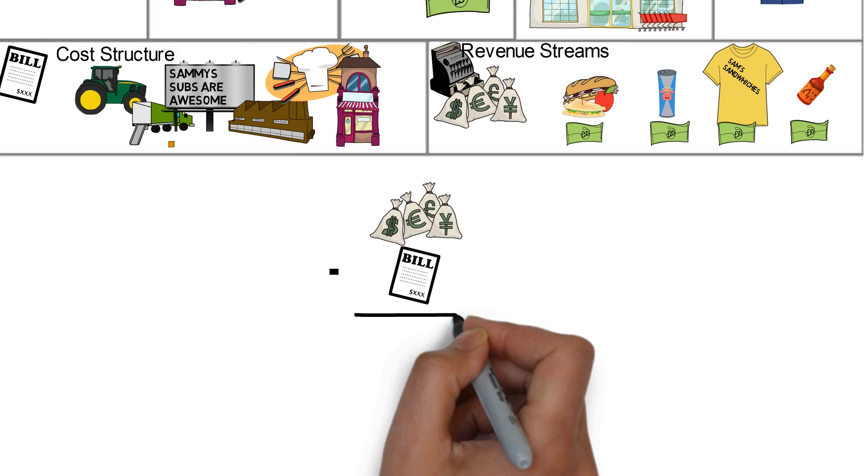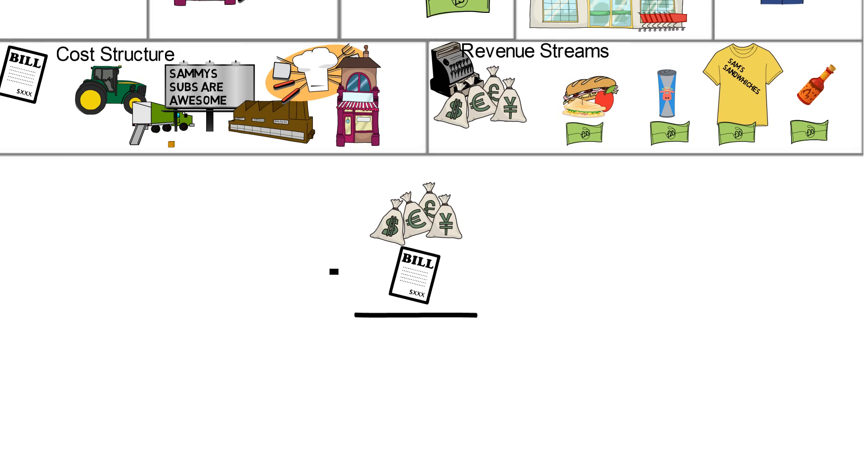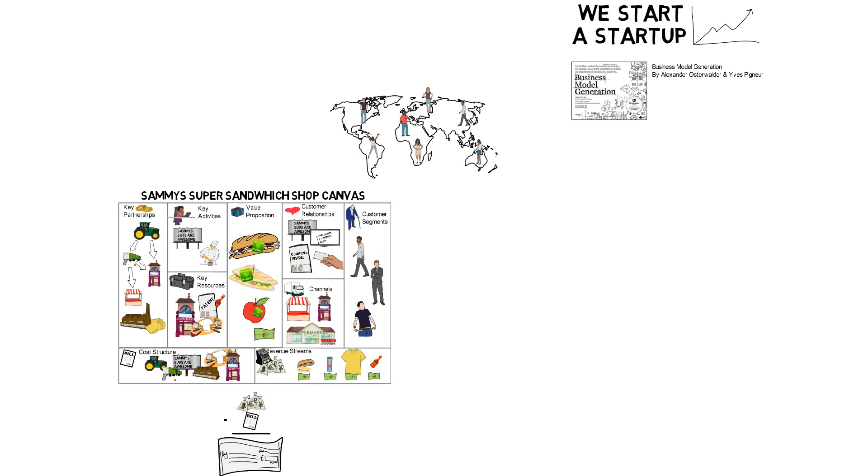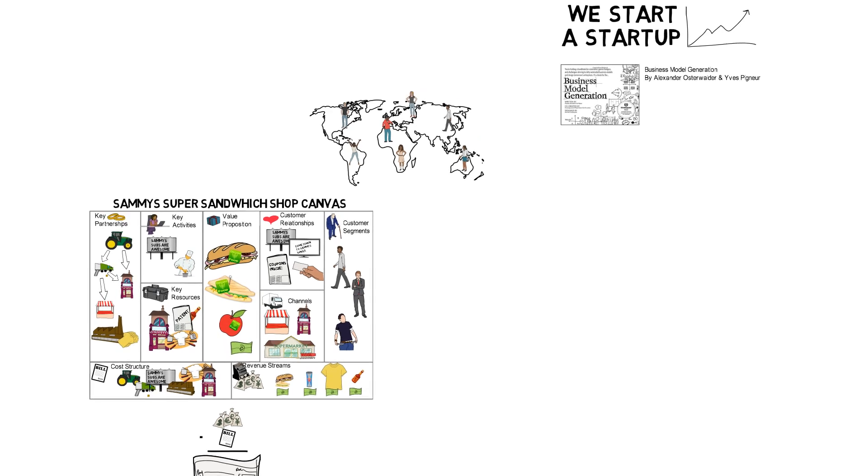When all is said and done, Sammy will sit down and subtract his costs from his revenues and he will get his profits. And since Sammy sandwiches have been selling off the shelves, Sammy will be going home with a nice paycheck. But the most important part of Sammy's business model and your business model is that no business can stay afloat for long without profitable customers.